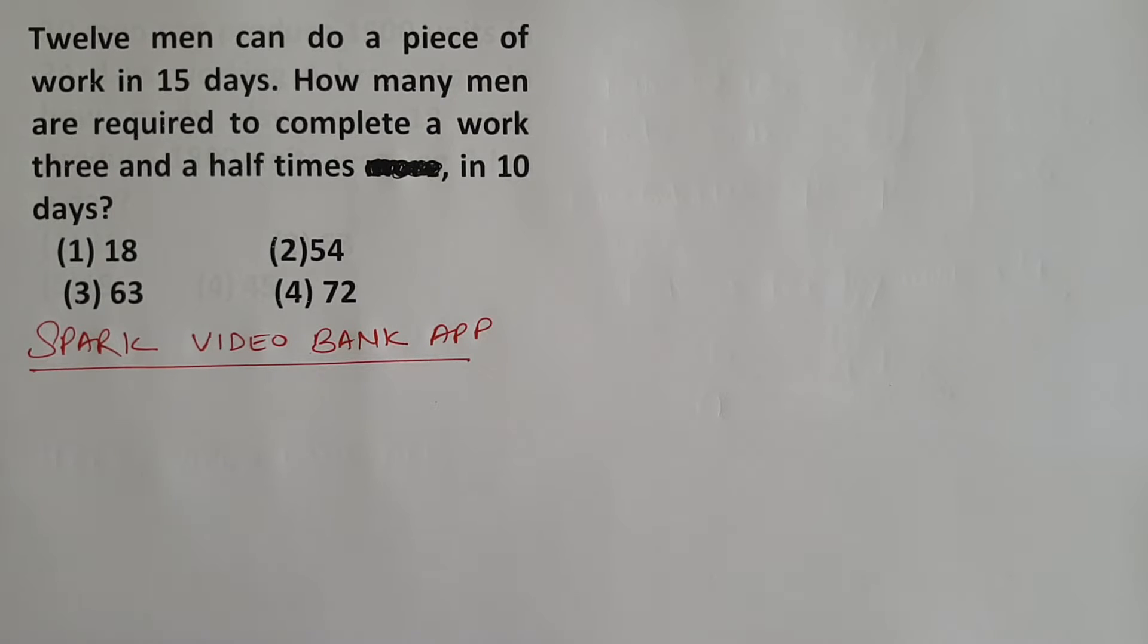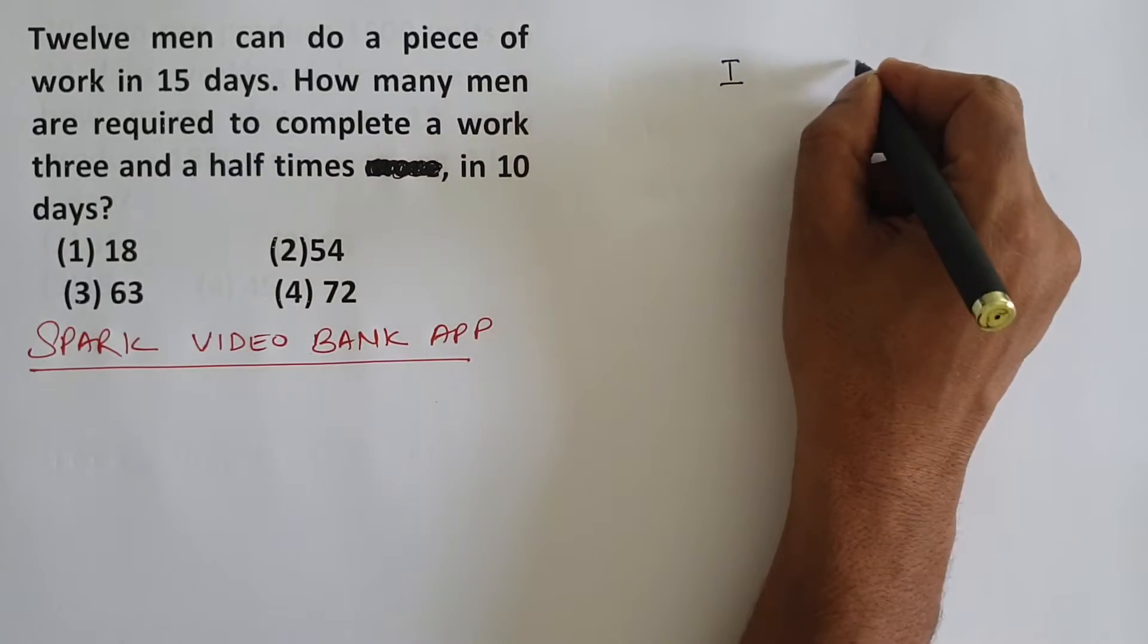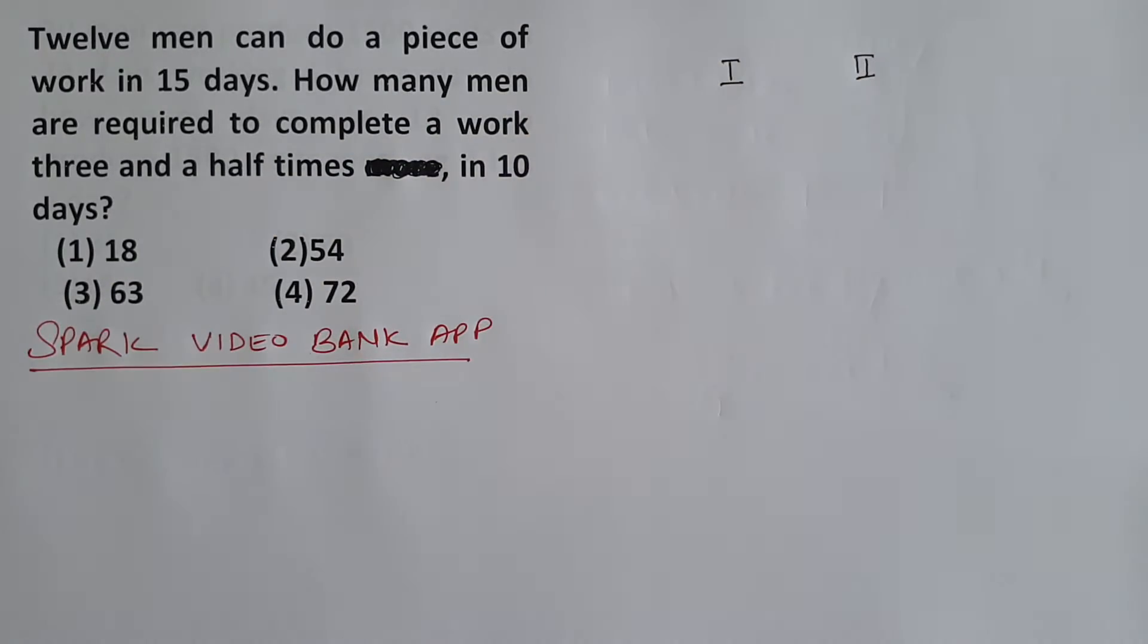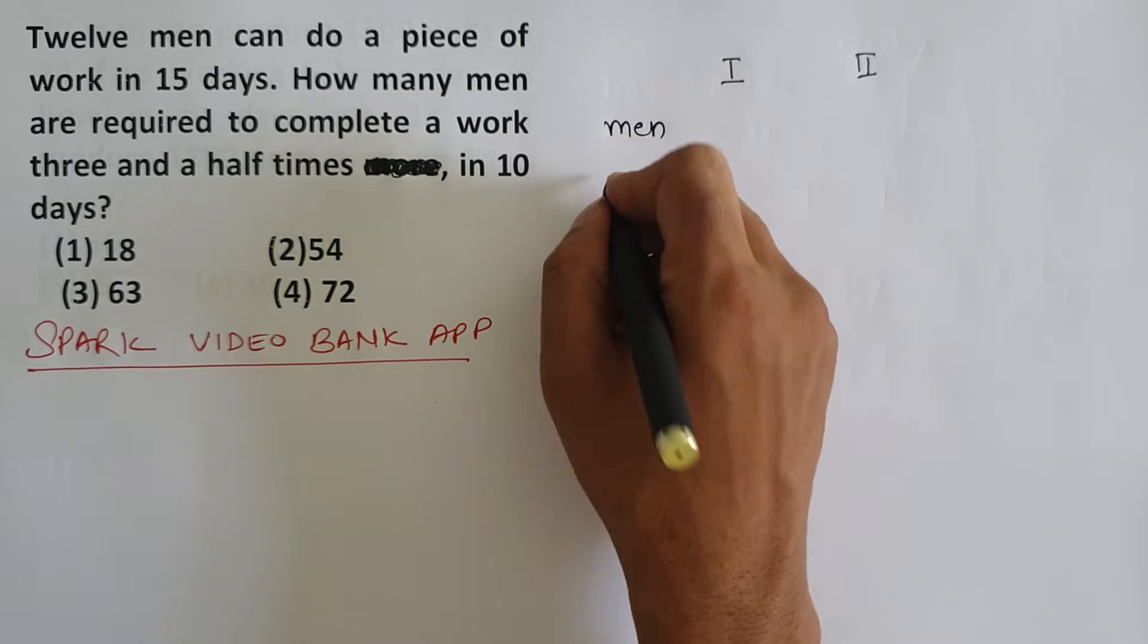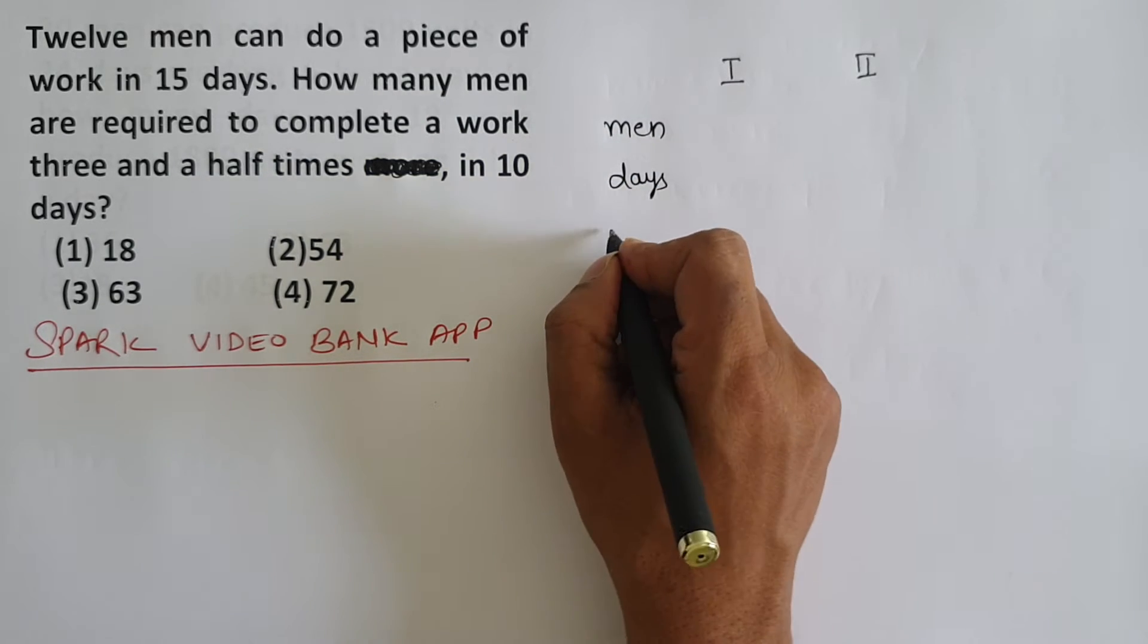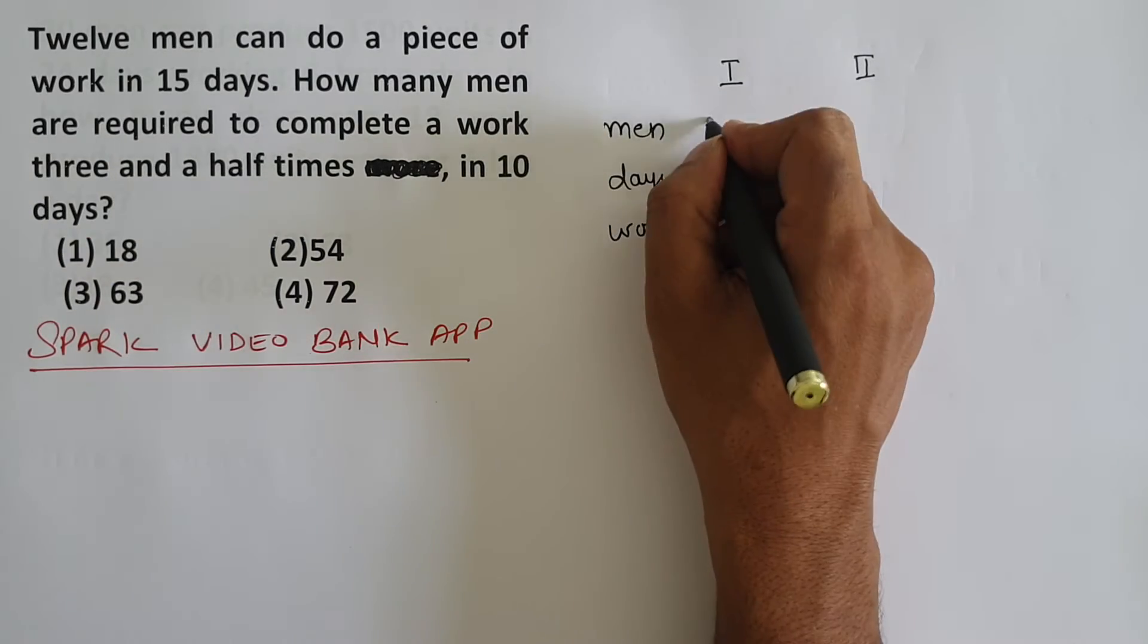This question, we solve using variation. Variation means initially how much was there and finally how much was there - we compare them. We are talking about men, we are talking about days, and we are talking about the quantity of work.